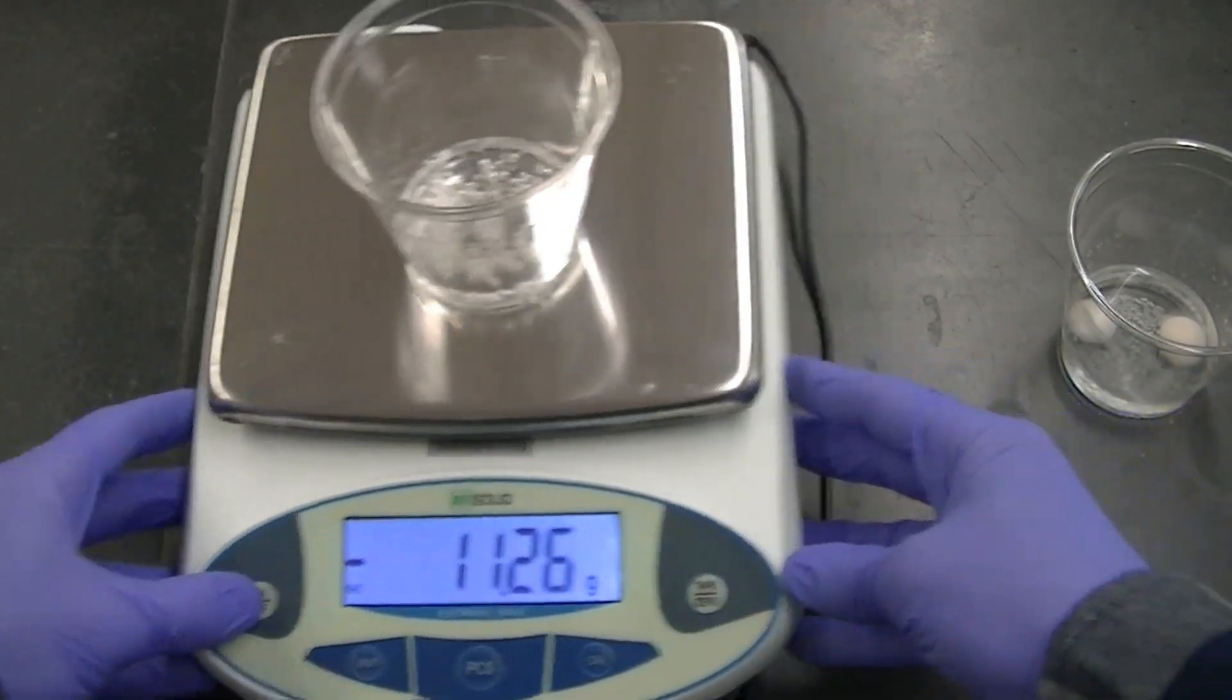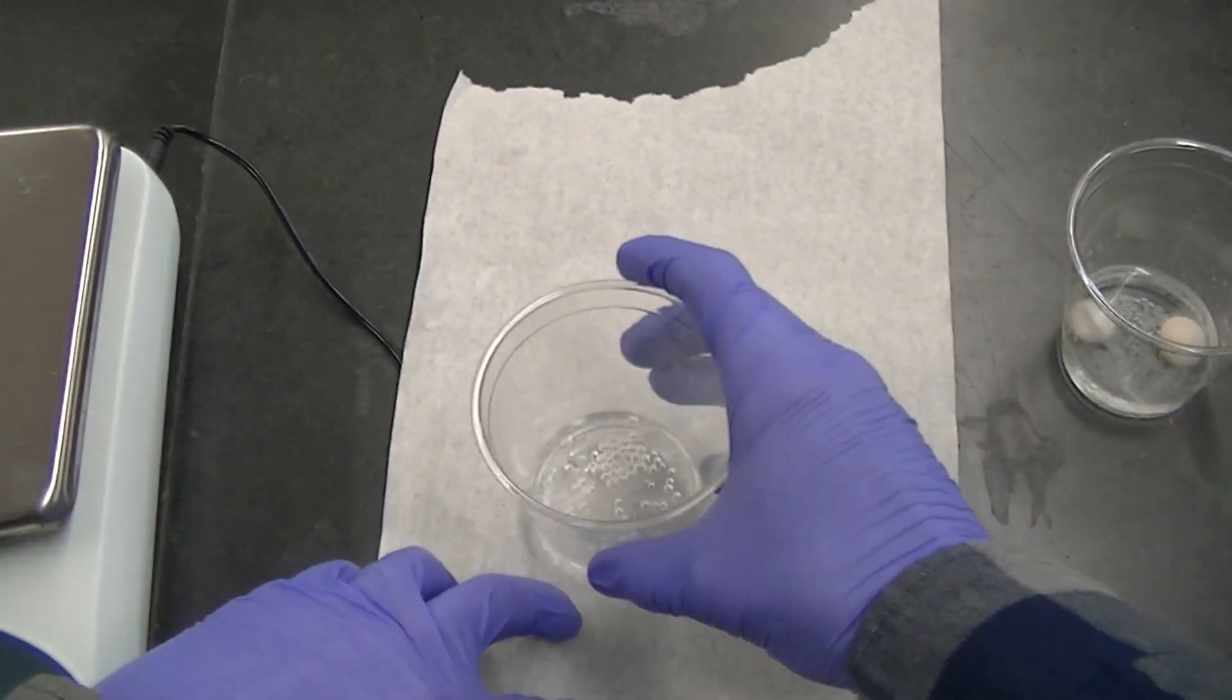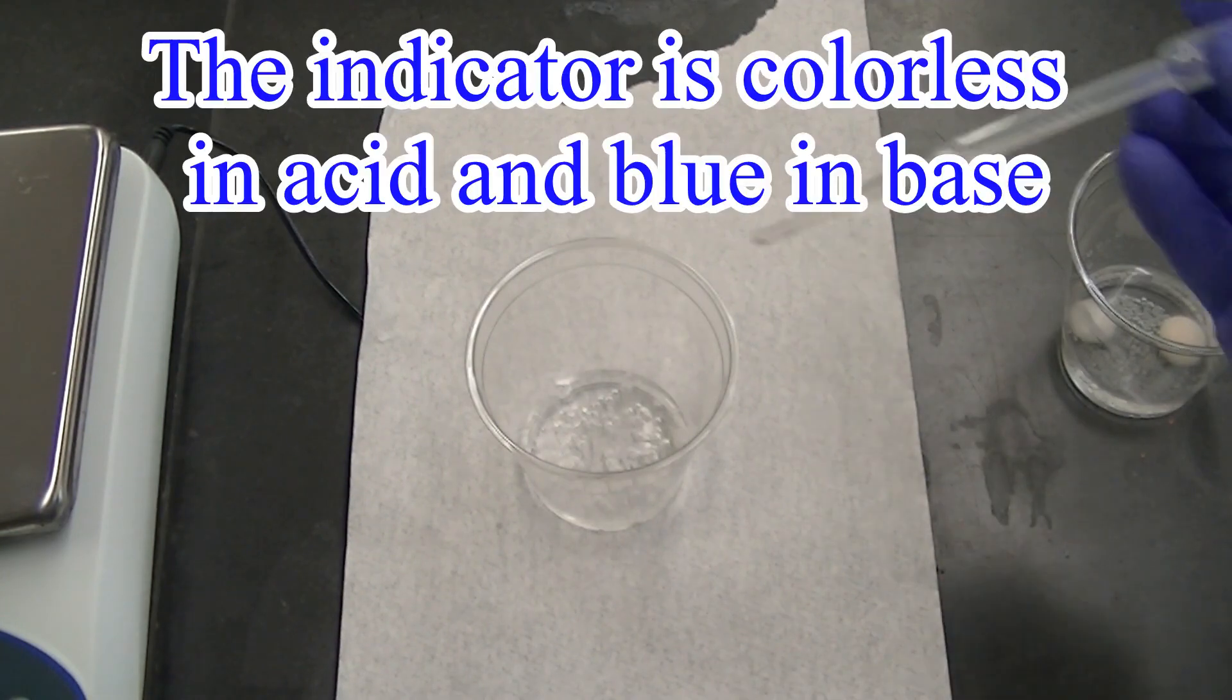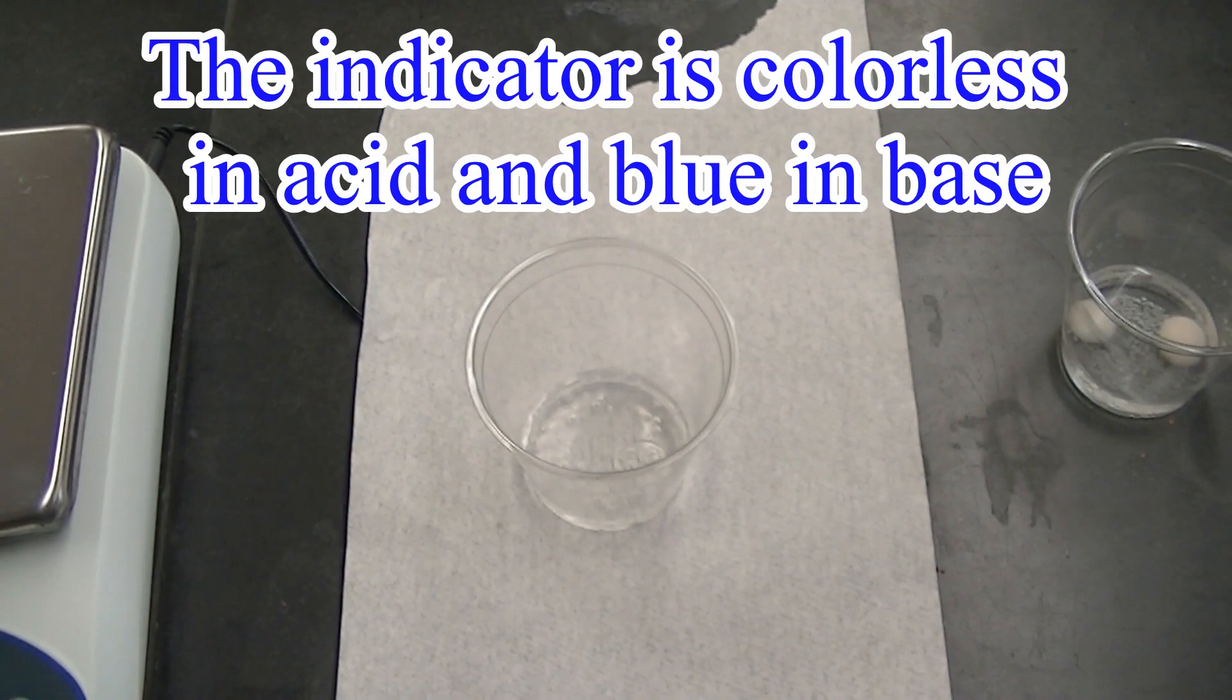Now we'll take our fresh sample of the diet 7up and we'll add a little bit of indicator to it. This indicator is colorless in acid and it's blue in base.